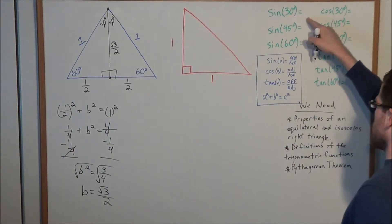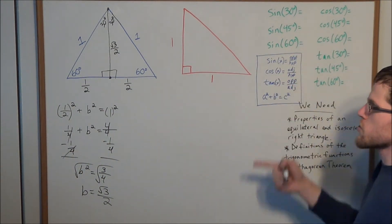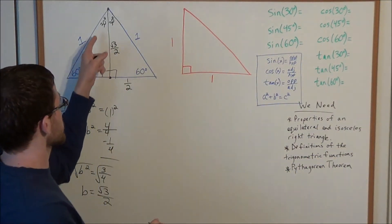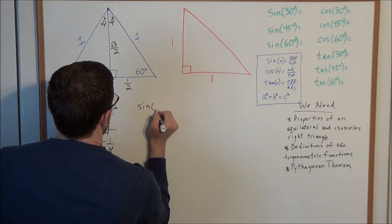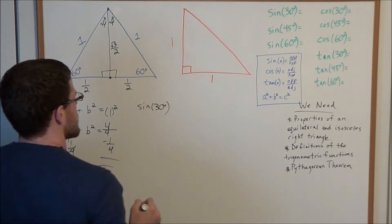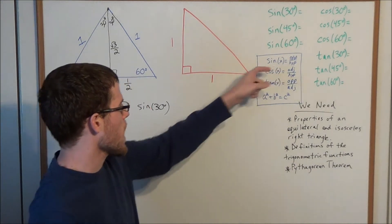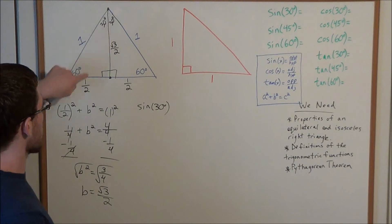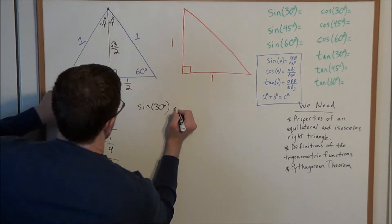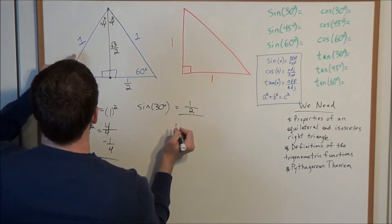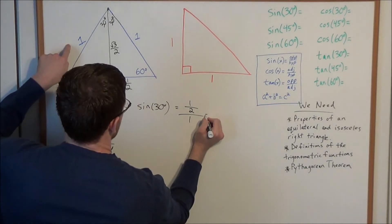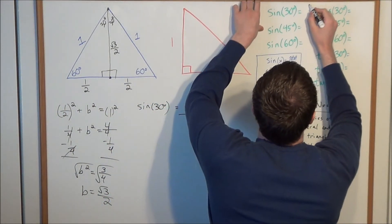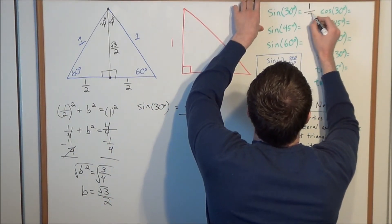Now we need the definition of the trigonometric functions. For sine of 30 degrees, the sine function gives the ratio of the opposite side to the hypotenuse on a right triangle. Looking at the 30-degree angle, the opposite side is one half, divided by the hypotenuse, which is one. So sine of 30 degrees equals one half.